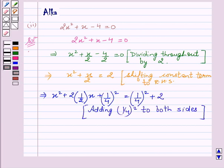Now, this can be written as (x + 1/4)² = 1/16 + 2.